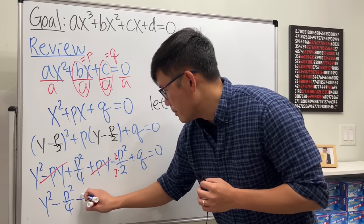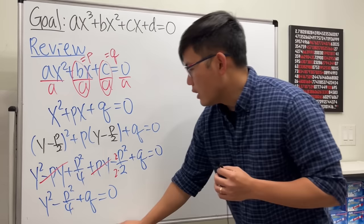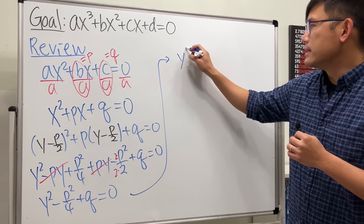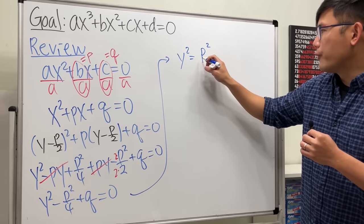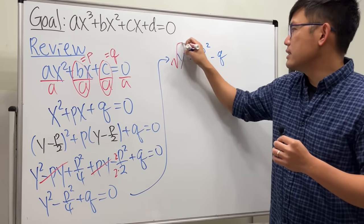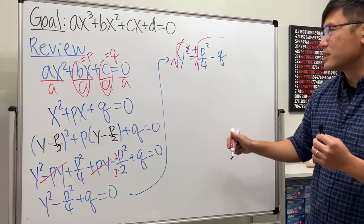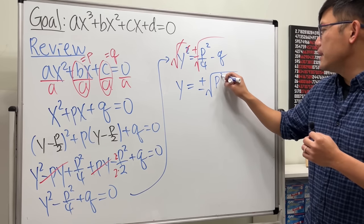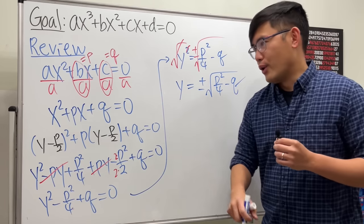We combine the constant terms. Getting a common denominator, we have p²/4 - 2p²/4 = -p²/4. So we're looking at y² - p²/4 + q = 0. Put those two terms to the other side: y² = p²/4 - q. Now we can just take the square root on both sides — so nice!